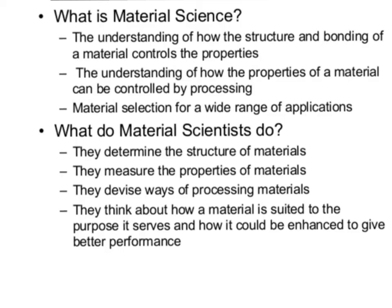So the branch of science I'm talking about is called material science, because it's the science of materials and how we use those to build our world. Here are the things that material science is concerned with. The first is understanding how the structure and bonding of a material controls its properties — that's what we just looked at with all those pictures: how the different particles are arranged, what their structure is, and therefore how those particular arrangements of atoms are useful.